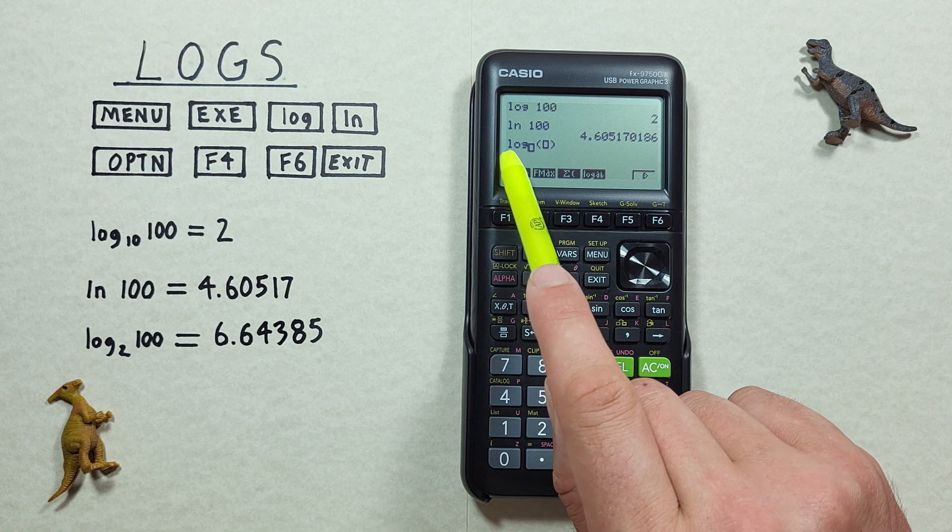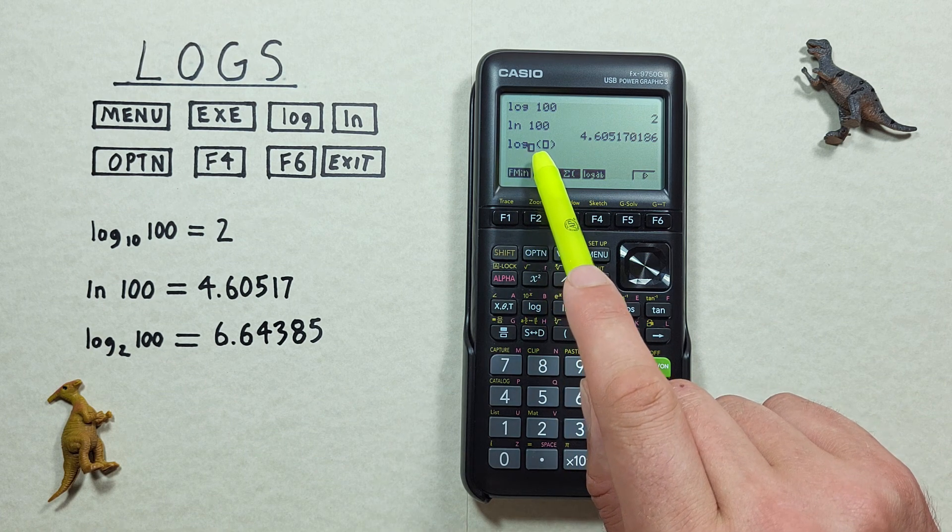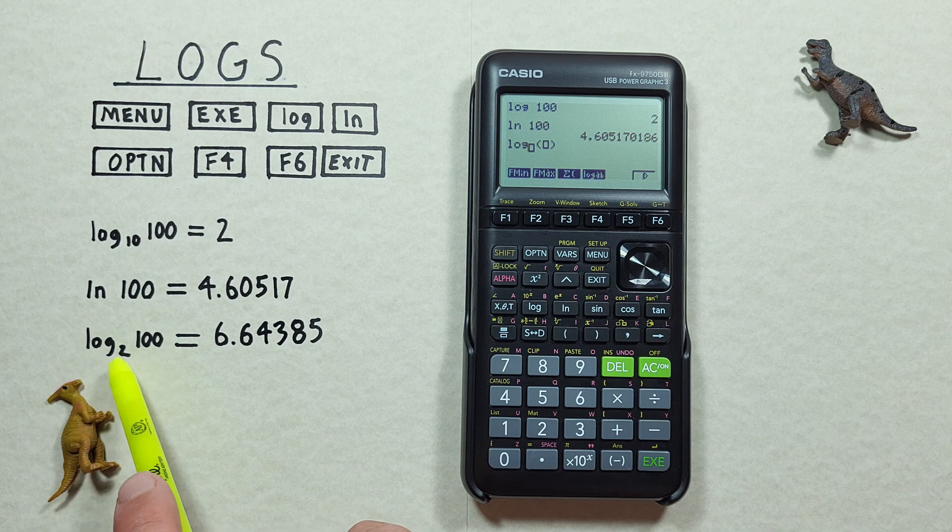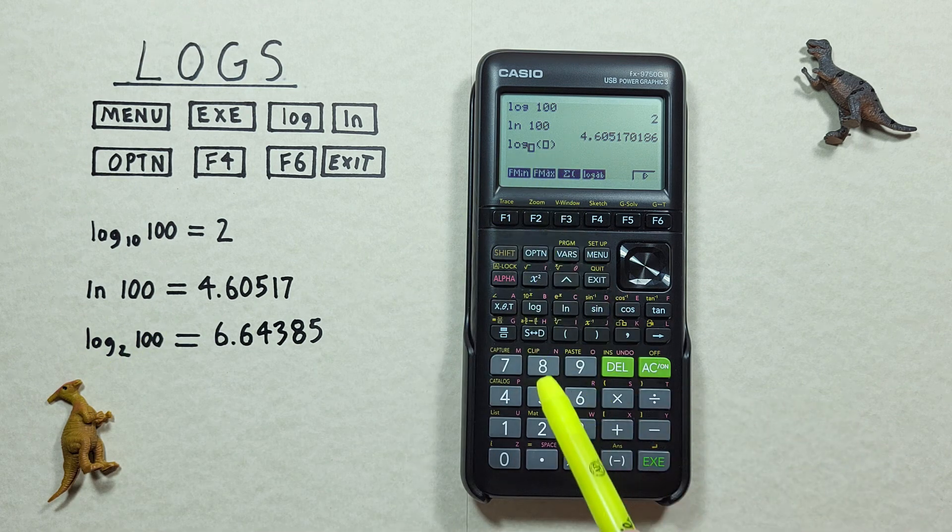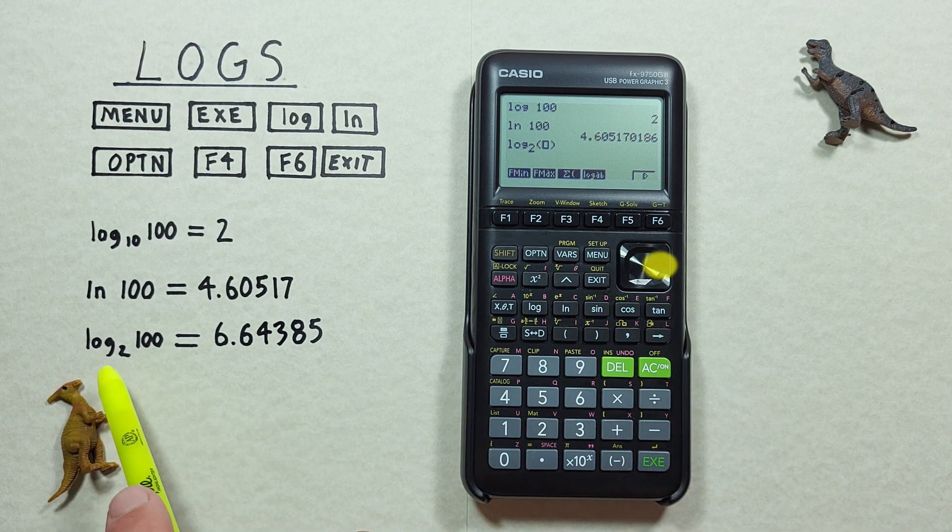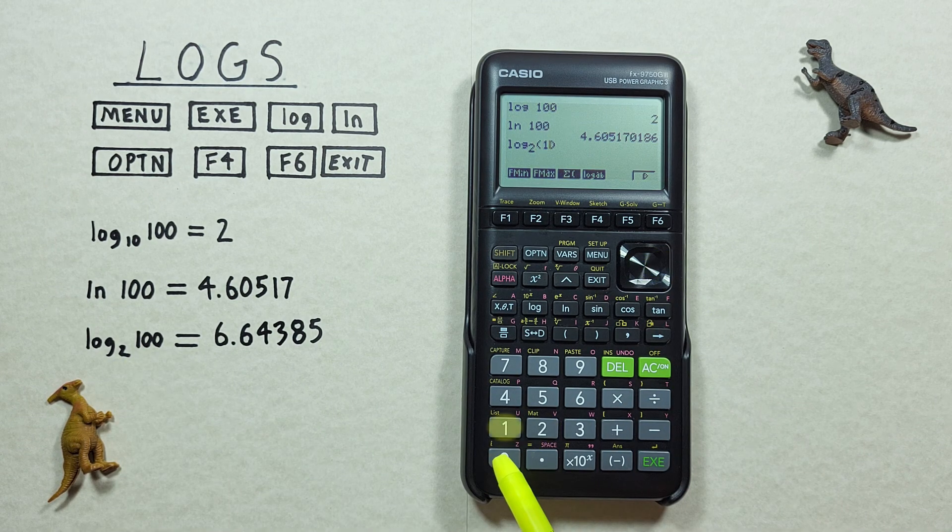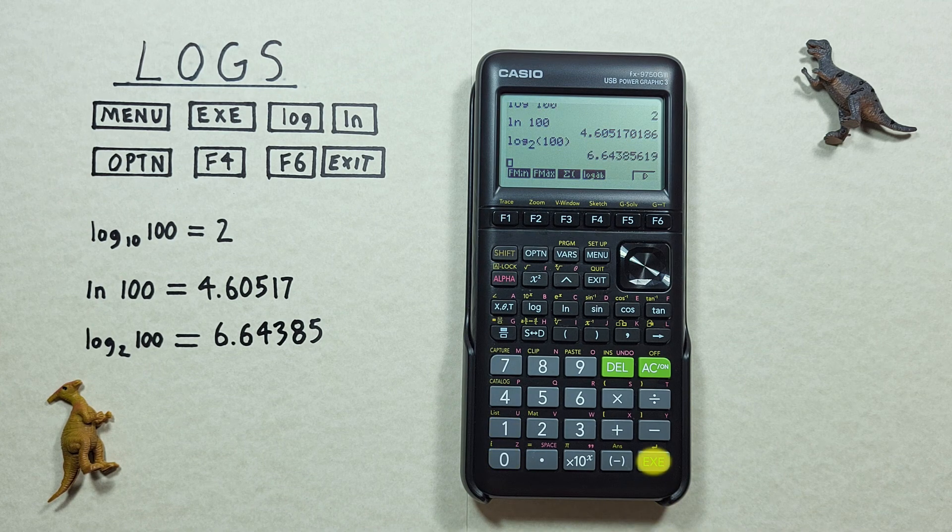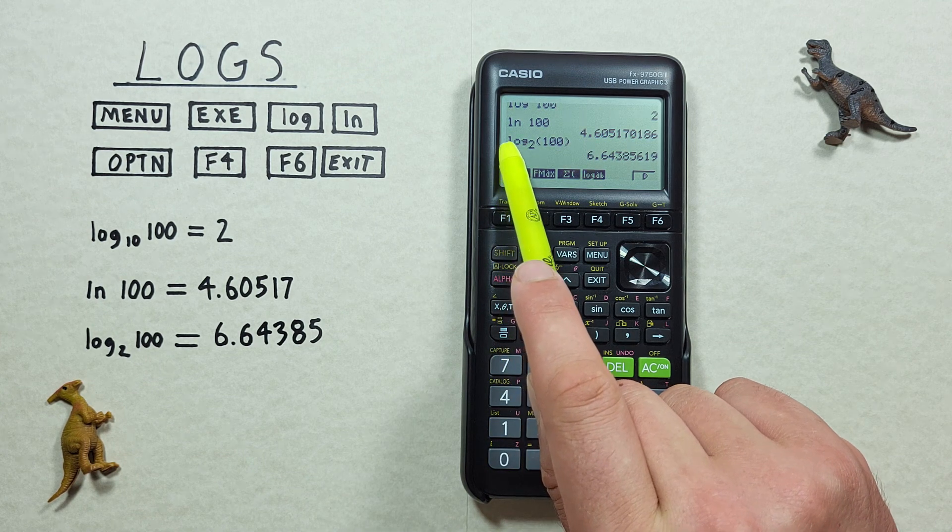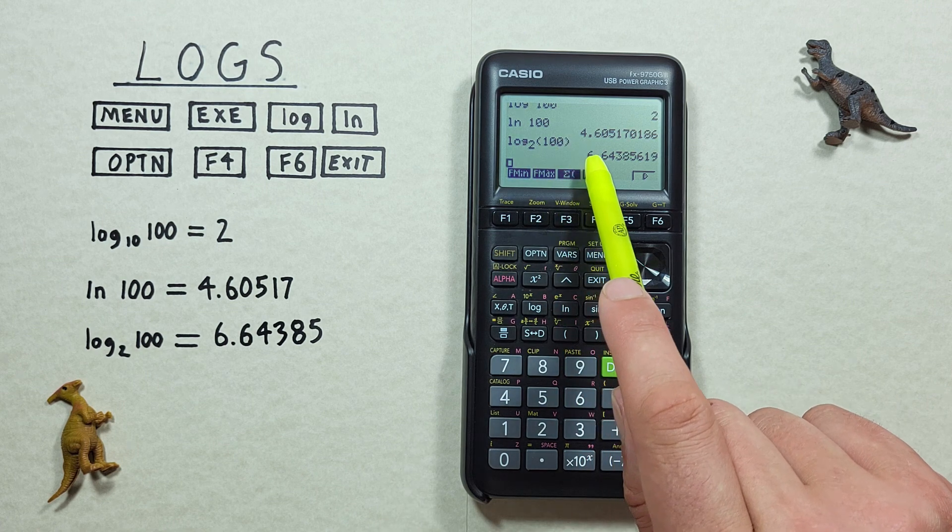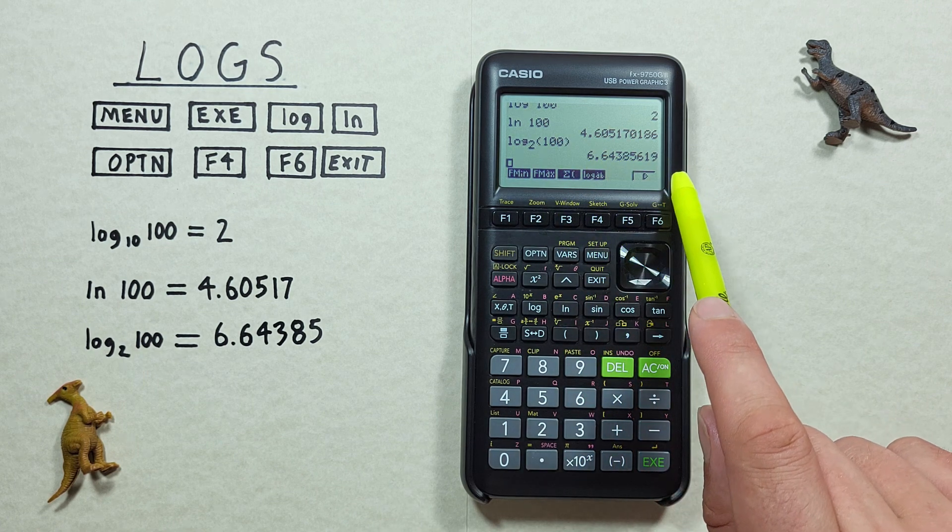And now we see a log on our screen with two boxes. So if we want to find log base 2 of 100, we put 2 in the first box, scroll to the right, and enter the 100 in the second box, and press the EXE. And we see we get a result of log base 2 of 100 is equal to 6.64385, etc., which is correct.